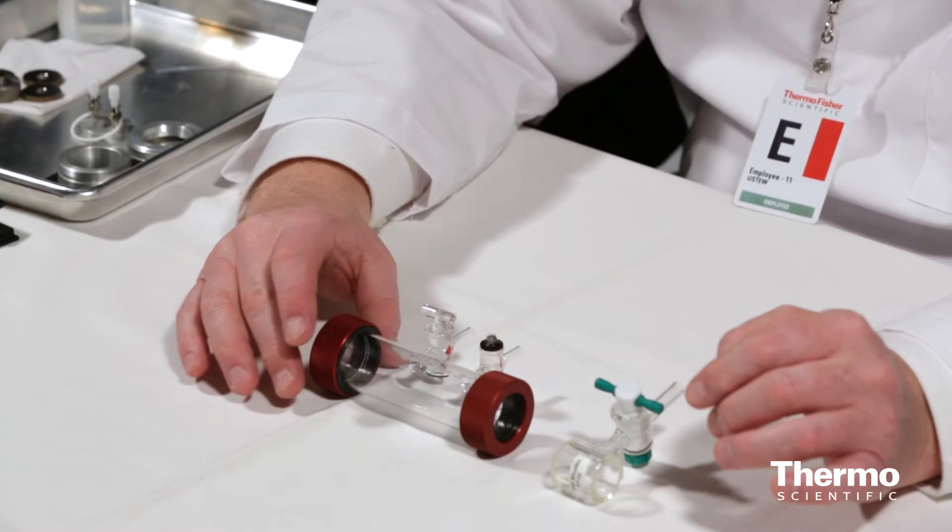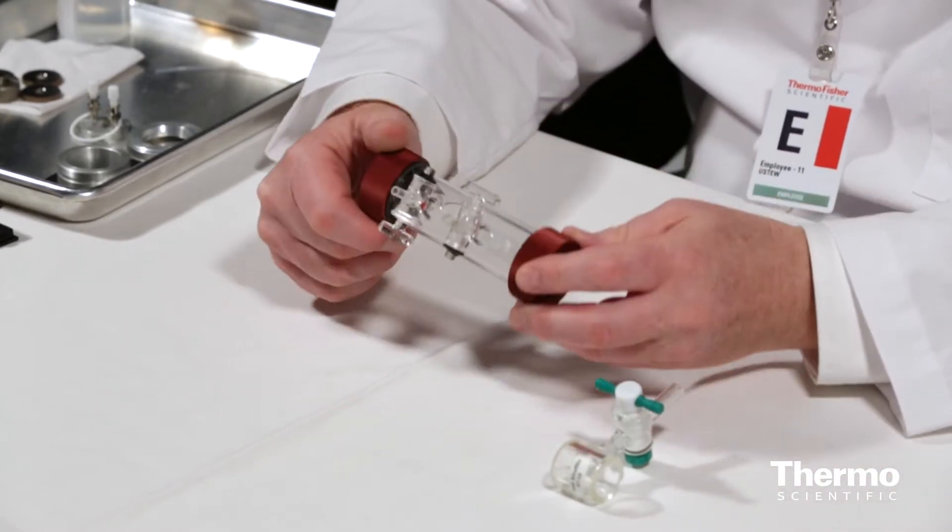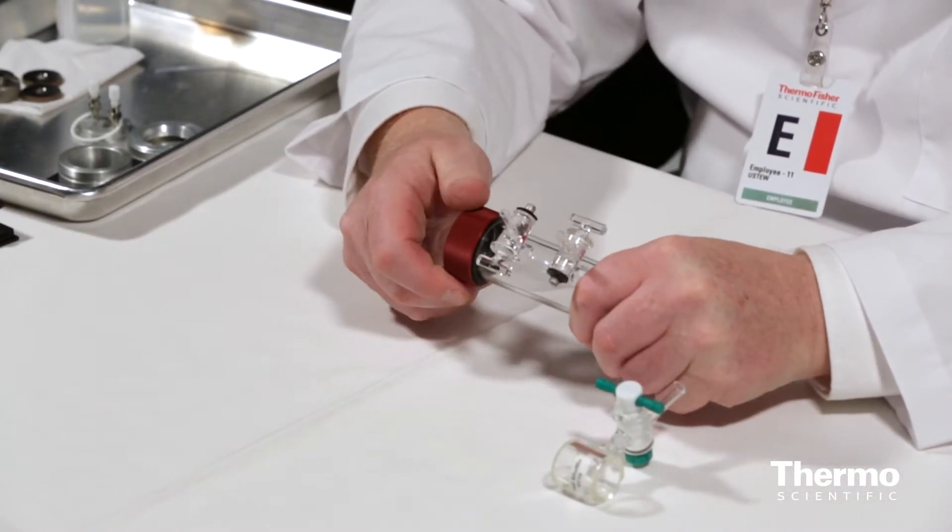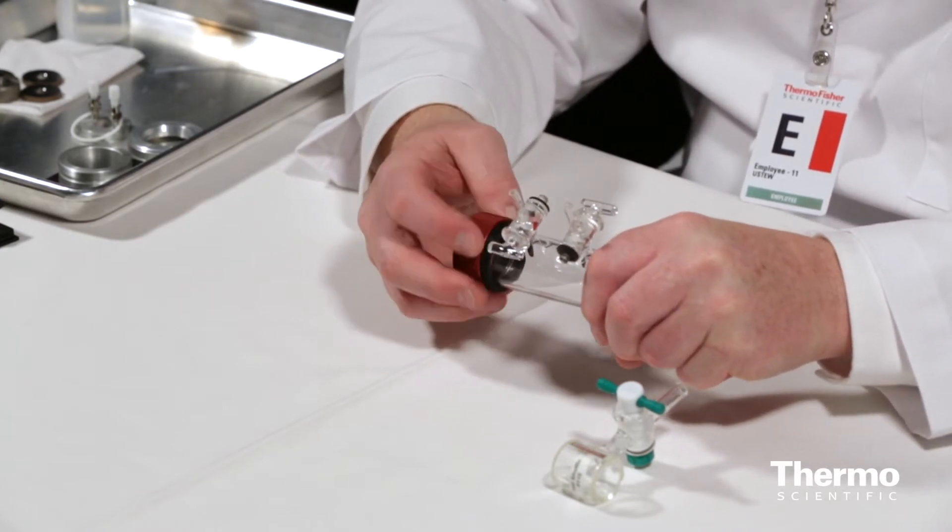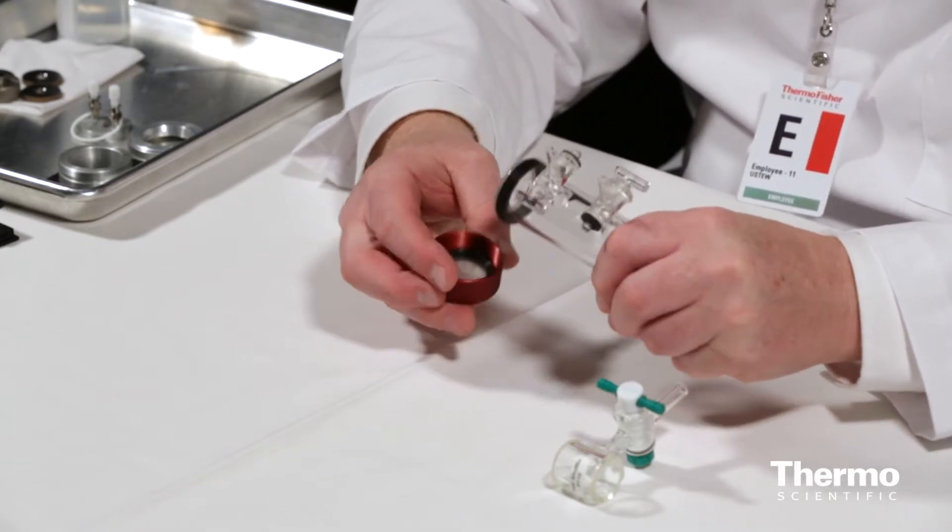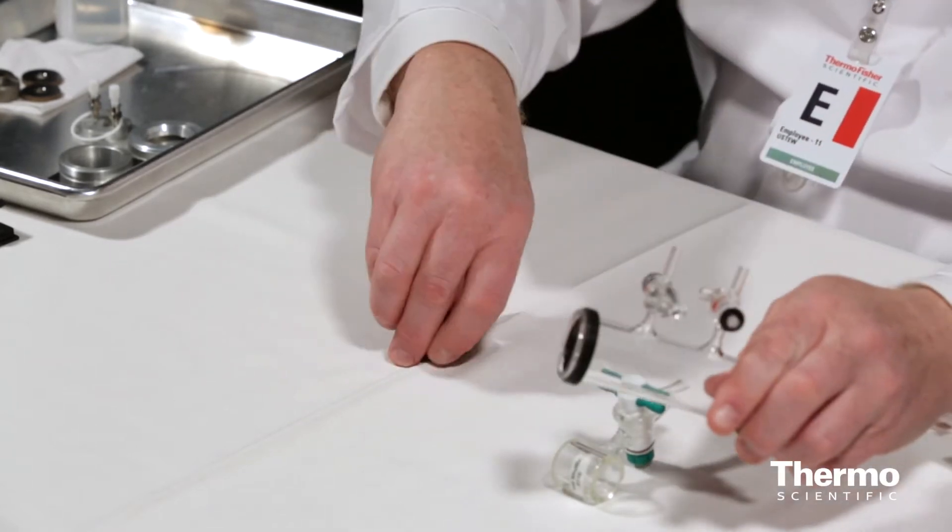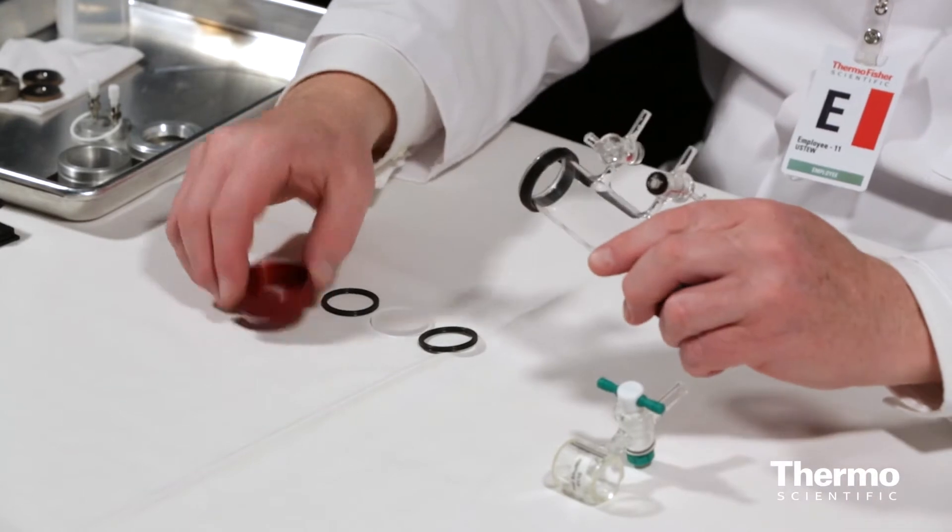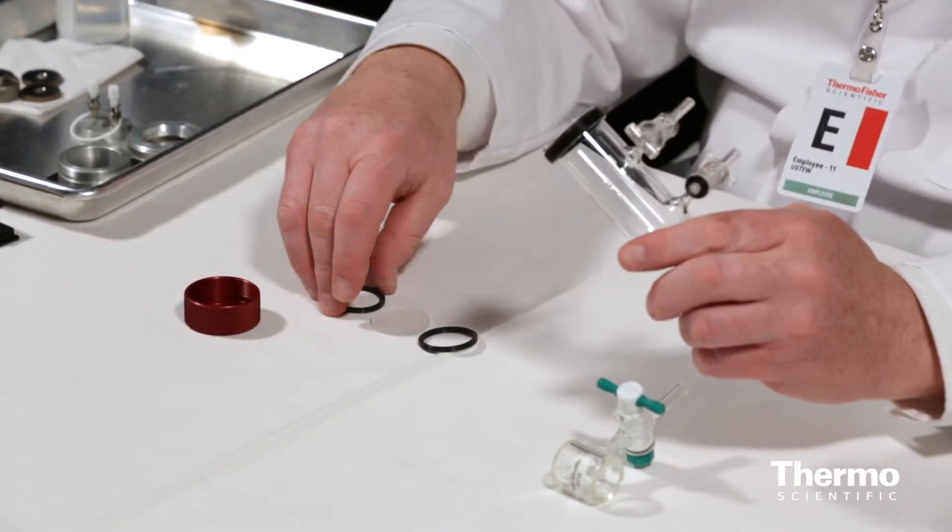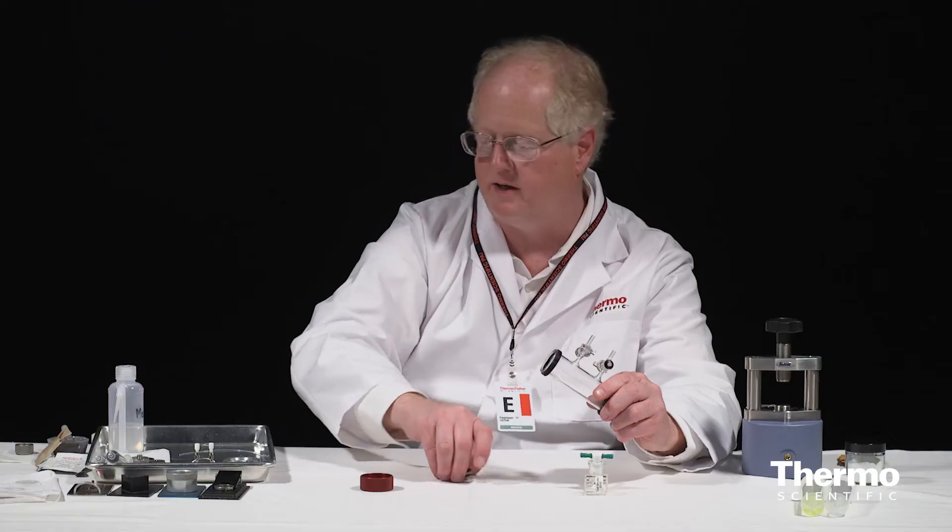This is a standard 10 centimeter cell. It's very simple. I will pop the end off just to show you the end window. There is a gasket on that window. So you have the window and a gasket on each side and the end just screws on and that's all there is to it to make the seal.